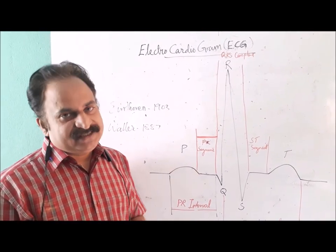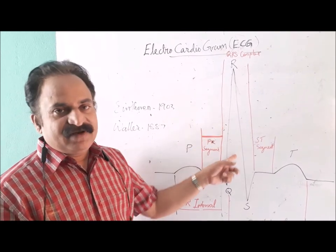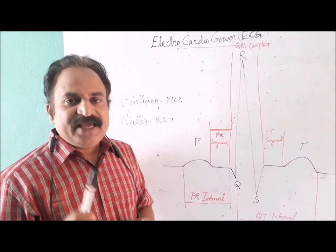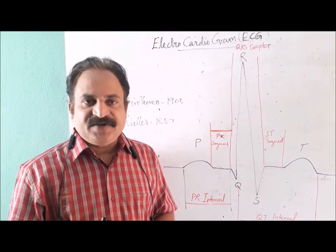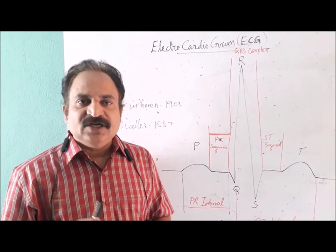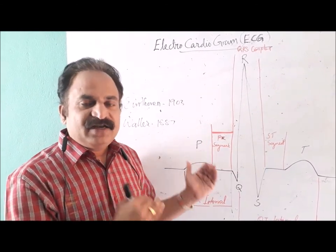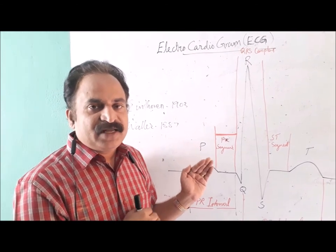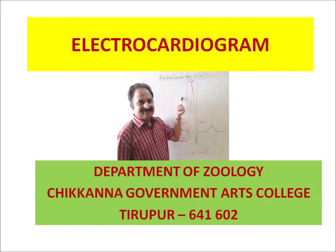We can now see the use of ECG. The electrocardiogram is the graph and the electrocardiograph is the instrument. Abnormalities in ECG waves — such as absence, spiking, or inversion — indicate various defects in the working of the heart, like valvular defects, atrial flutter, ventricular fibrillation, thrombosis, and angina. I hope you could understand the five deflections in ECG and the use of studying ECG — to understand abnormalities in the working of the heart. Thank you for watching.